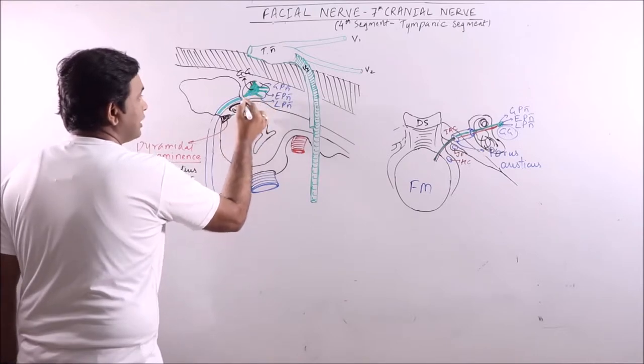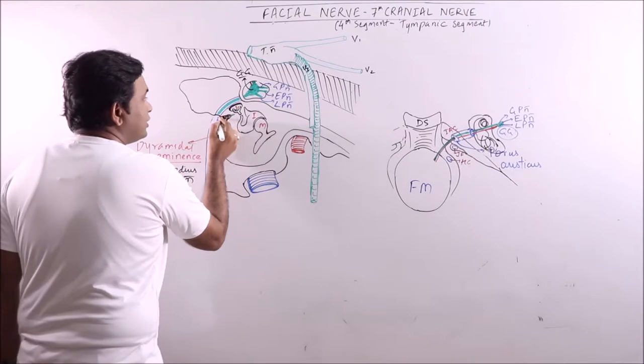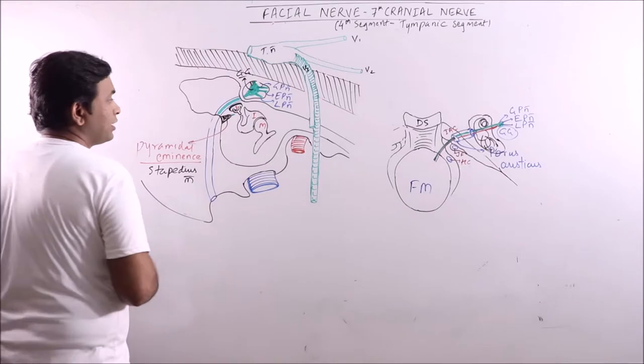It runs posteriorly into the cavity of middle ear and then reaches just behind the pyramidal eminence. This is pyramidal eminence.